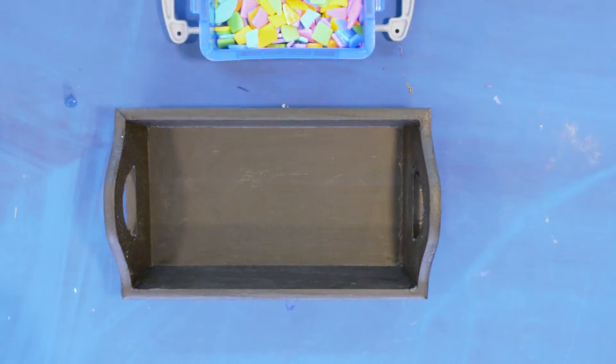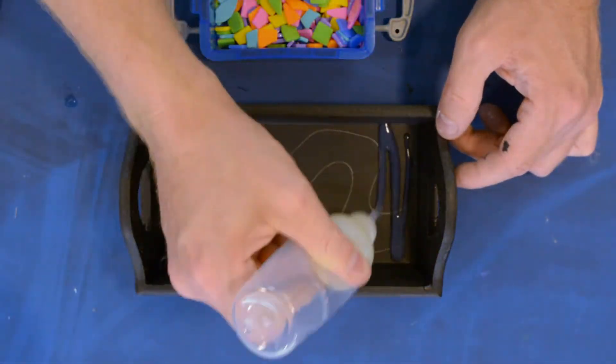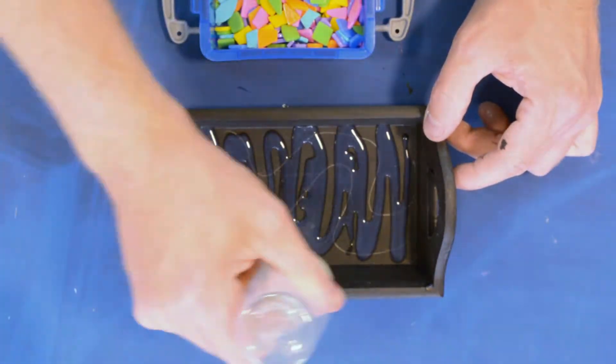All right everyone, first thing I recommend you do is paint your entire tray black with the black we provided in the kits. That makes the color stand out better and creates a nicer gap between all of the pieces, which makes it look a lot more finished.